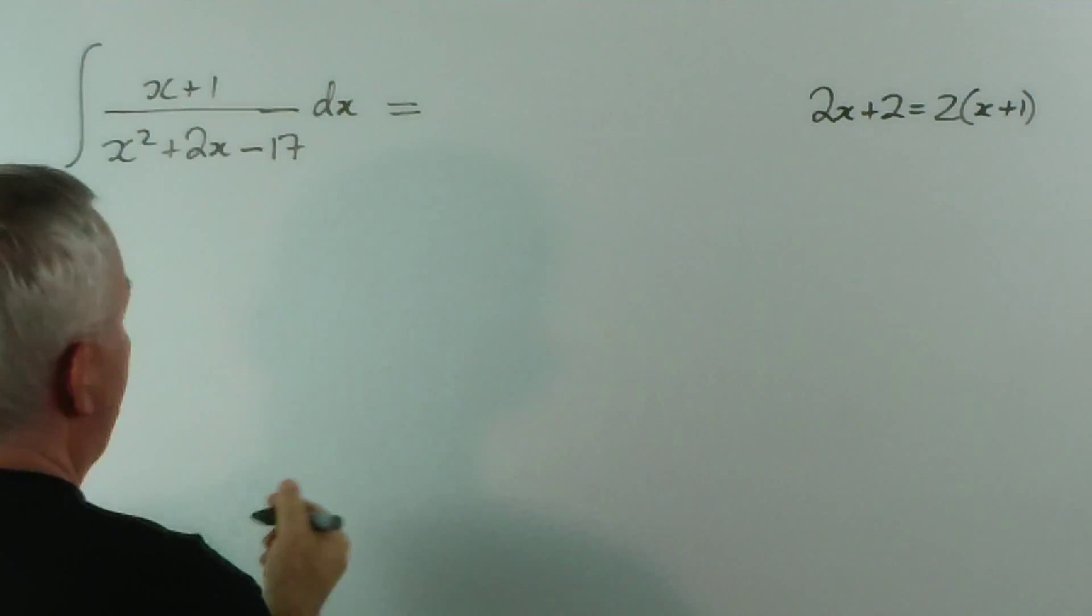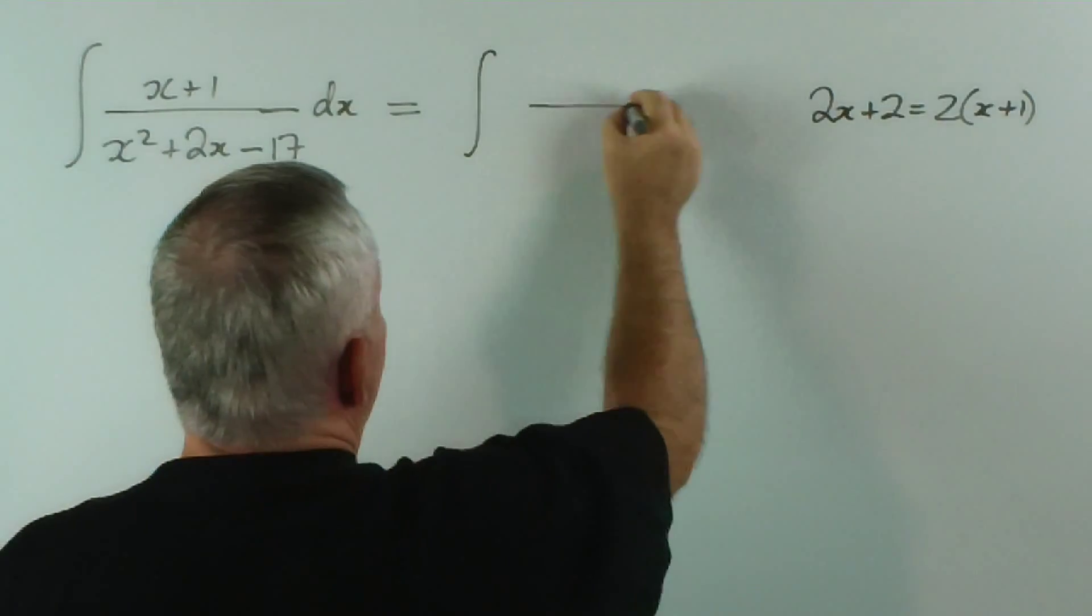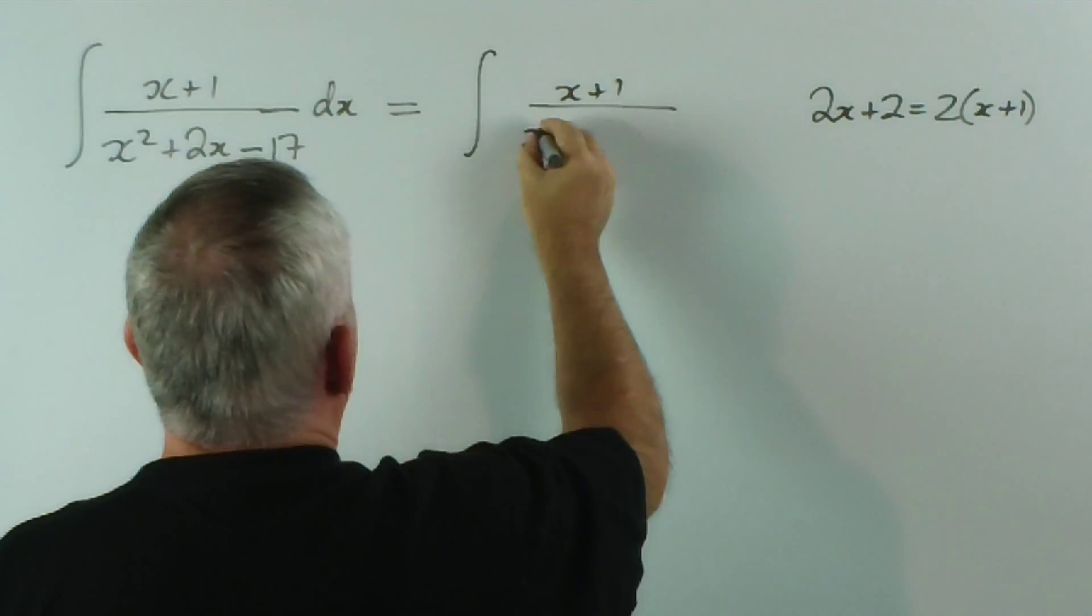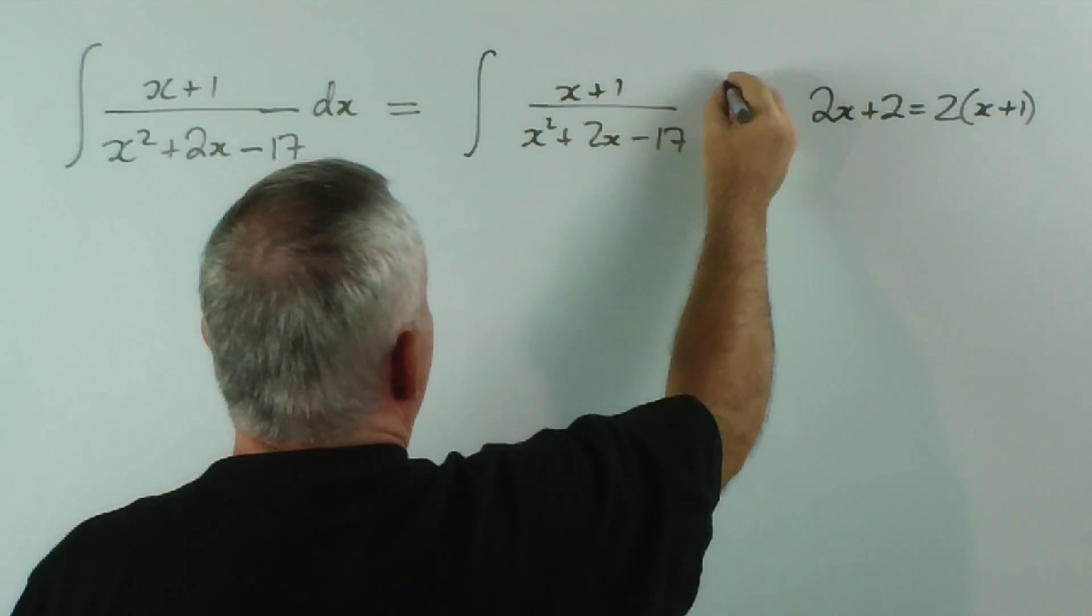So, if this was what we had to find, we would write the integral of (x plus 1) over (x squared plus 2x minus 17) dx.